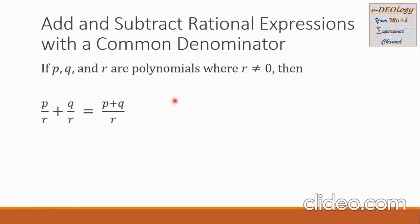Let us have the formal definition of adding and subtracting rational expressions with a common denominator. If P, Q, and R are polynomials, where R is not equal to 0, then the rational expression P over R plus Q over R — take note the denominators are common — is equal to the sum of P and Q, the numerators, all over the common denominator R.